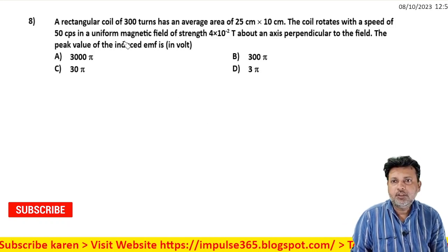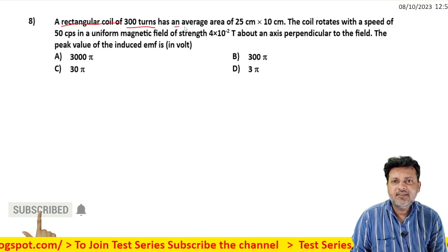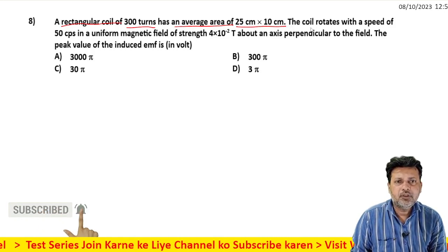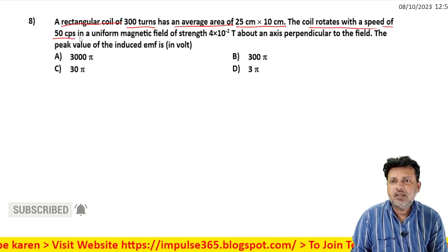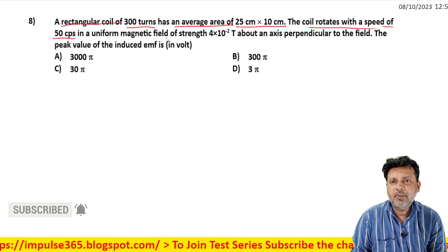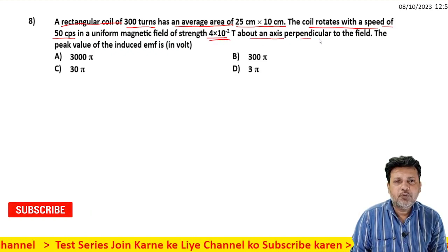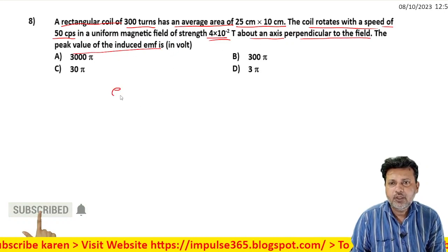Chalo, next question. A rectangular coil of 300 turns has an average area of 25 cm × 10 cm. The coil rotates with a speed of 50 cycles per second in a uniform magnetic field of strength 4×10^-2 T about an axis perpendicular to the field. The peak value of the induced EMF - what do you think?